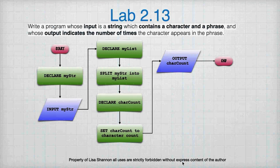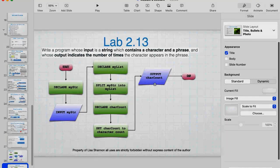You want to declare a character count, then set the character count using dot notation on the string. When Zybooks gives it to you, it's going to be a character, then a space, then a string. So you split it and use the first element in the list to check against the second element and get the count. Then we output the count. Those are the two labs for 2.13.